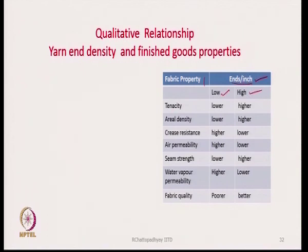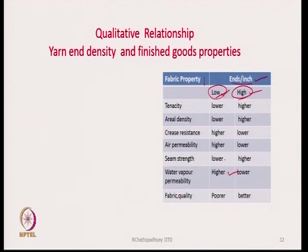Water vapor permeability will be higher if ends per inch is low, because when ends per inch is low there are a lot of gaps between the yarns, so vapor permeability increases. However, overall fabric quality will be poor if ends per inch is low, because there will be too much space between yarns — the fabric will not be tight enough and will not be stable. That type of fabric will be poor in quality.